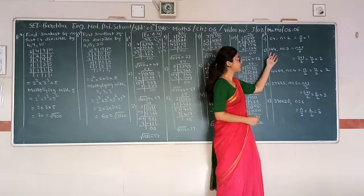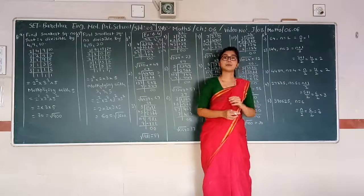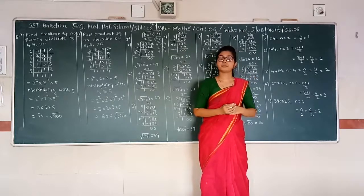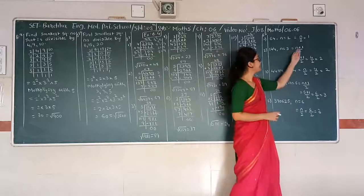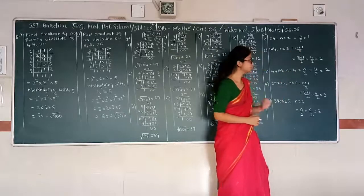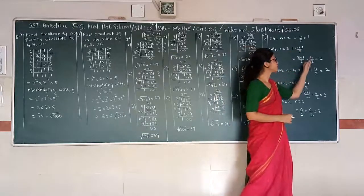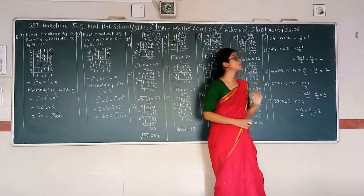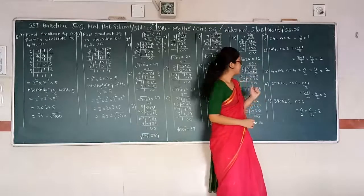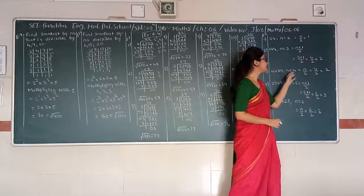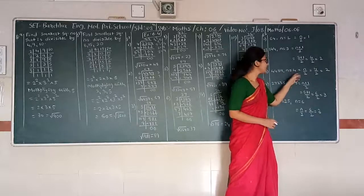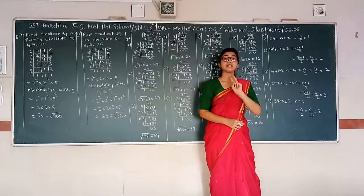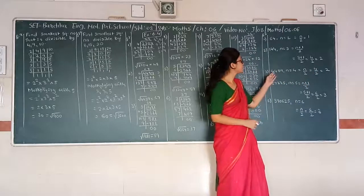For 144, N equals 3. Since 3 is odd, we use (N+1)/2. 3 plus 1 upon 2 is 4 upon 2, which equals 2. There will be 2 digits in the square root of 144. For 4489, N equals 4. Since 4 is even, N divided by 2 gives 2. There will be 2 digits in the square root of 4489.